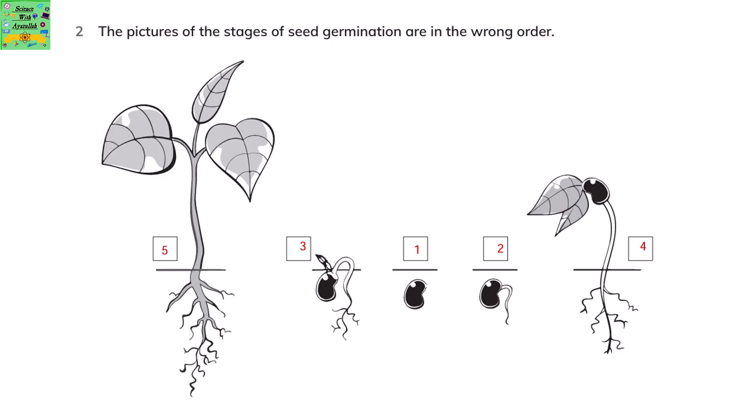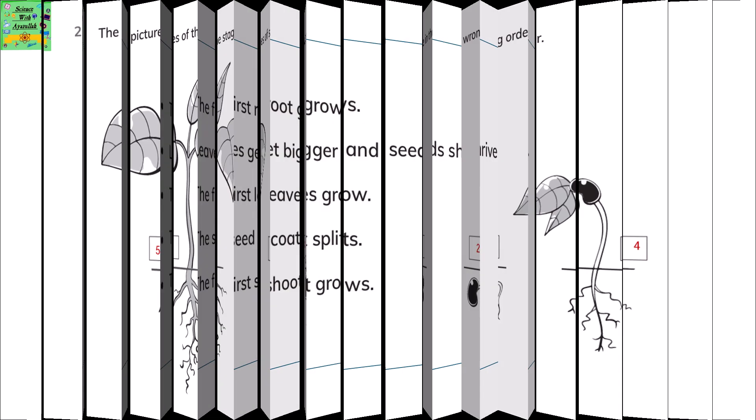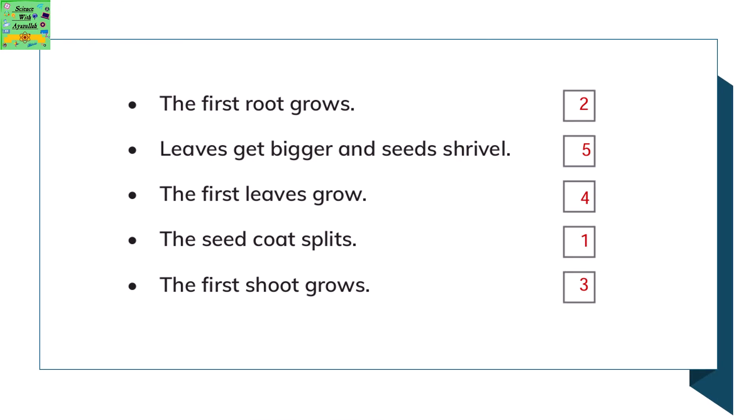The pictures of the stages of seed germination are in the wrong order. You need to number them from 1 to 5 in the correct order. You can number this according to the numbered picture.